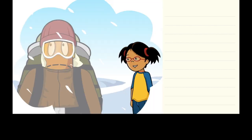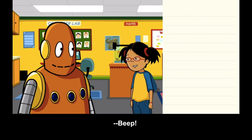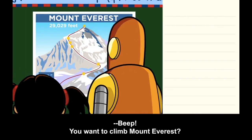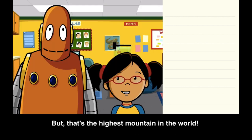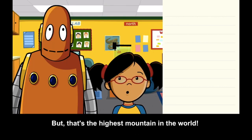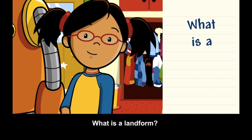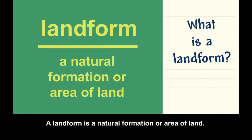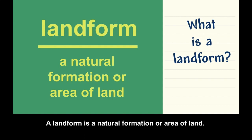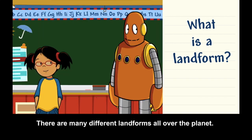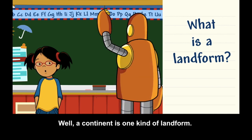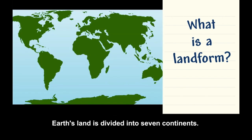What's up, Moby? You want to climb Mount Everest? But that's the highest mountain in the world. What is a landform? A landform is a natural formation or area of land. There are many different landforms all over the planet. Well, a continent is one kind of landform. Earth's land is divided into seven continents.